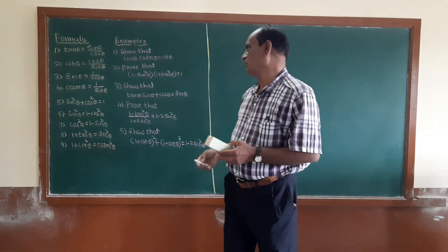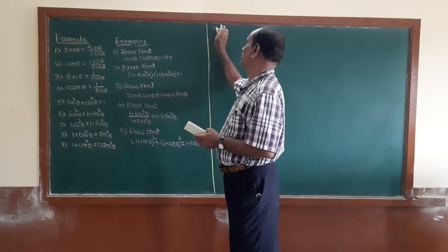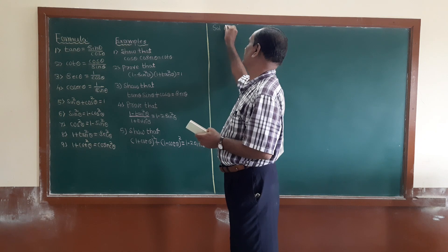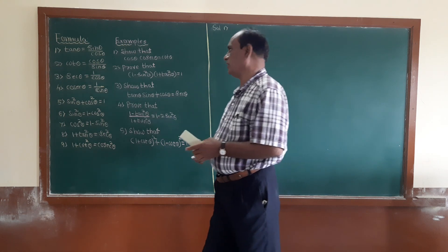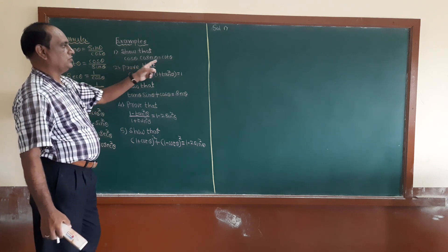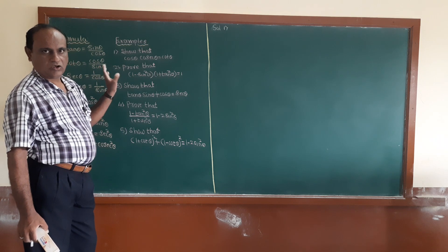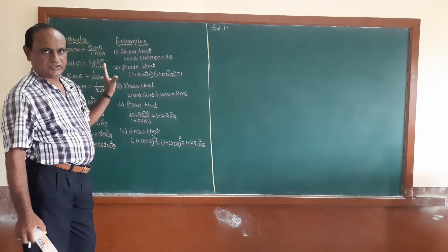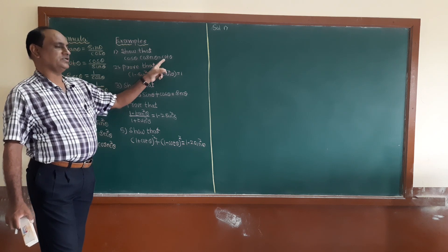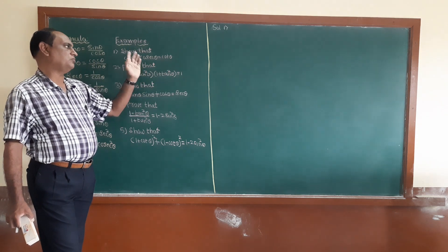Now let's work through the first example. Show that cos theta times cosec theta is equal to cot theta. We start with the left-hand side, LHS, and work toward the right-hand side, RHS. The answer should be cot theta.